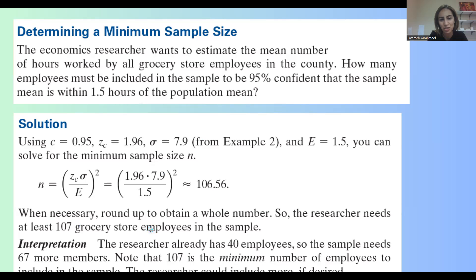The researcher already had 40 employees, remember, in the very first example. And then the sample needs 67 more members. Otherwise, the information that you calculate is not accurate.